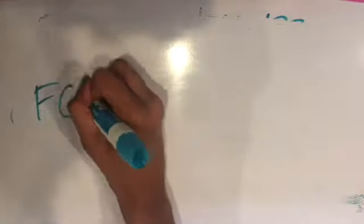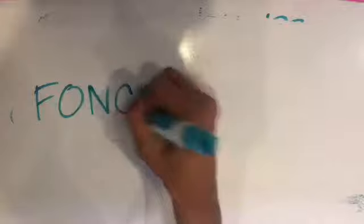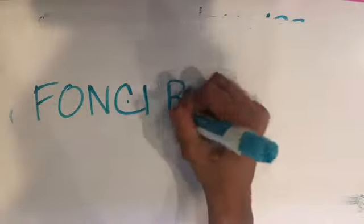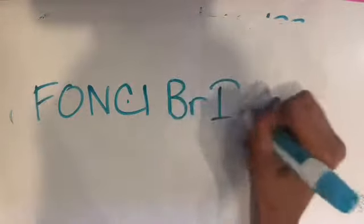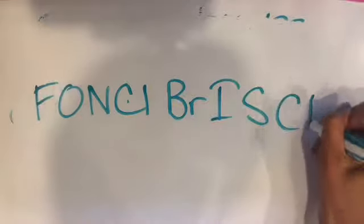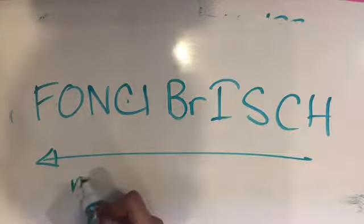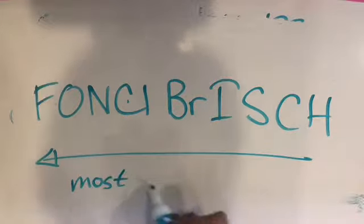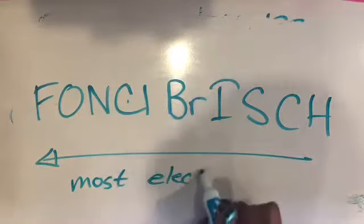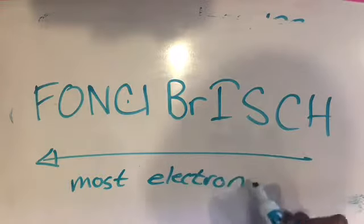You can determine how electronegative an element is using the acronym FUNCLEBUSH. This stands for fluorine, oxygen, nitrogen, chlorine, bromine, iodine, sulfur, carbon, and hydrogen. Fluorine is the most electronegative element in the periodic table.